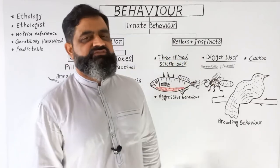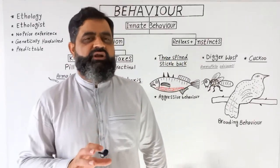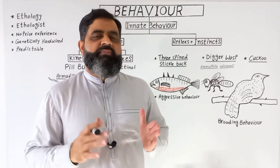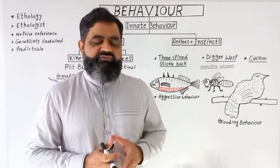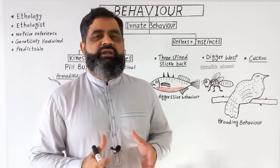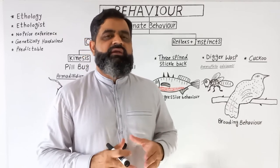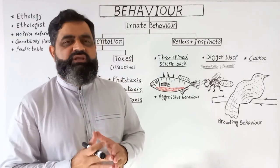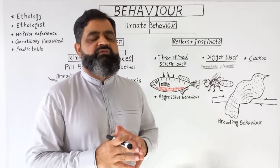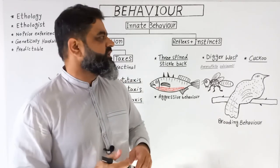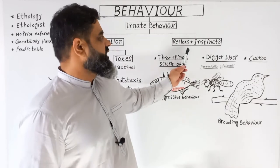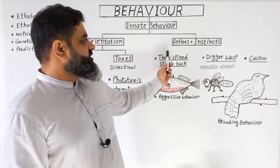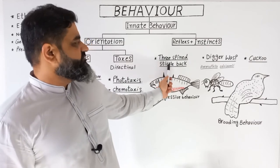The second type of innate behavior is instincts. These are very complex behaviors and ethologists are trying to understand them deeply. There are many different types of instincts, like aggression, mating, courtship, and territory marking. We are going to look at three examples to examine instinctive behavior, which is also known as innate behavior.